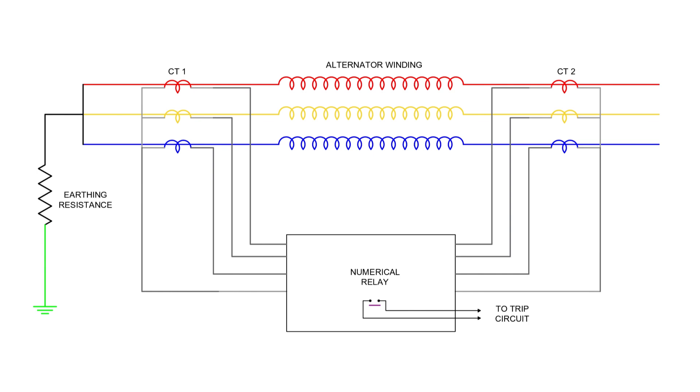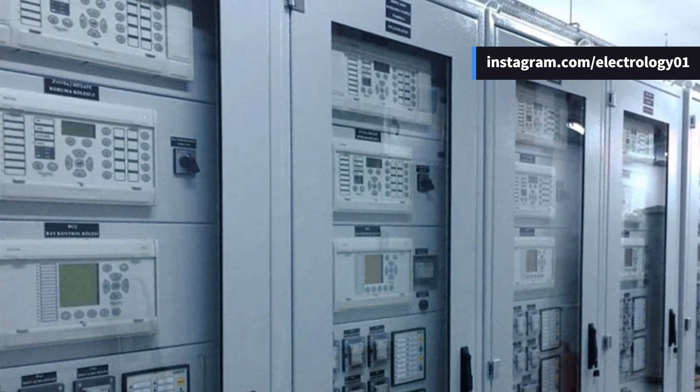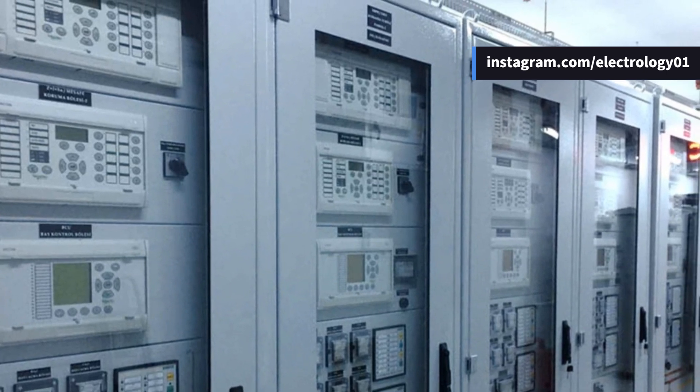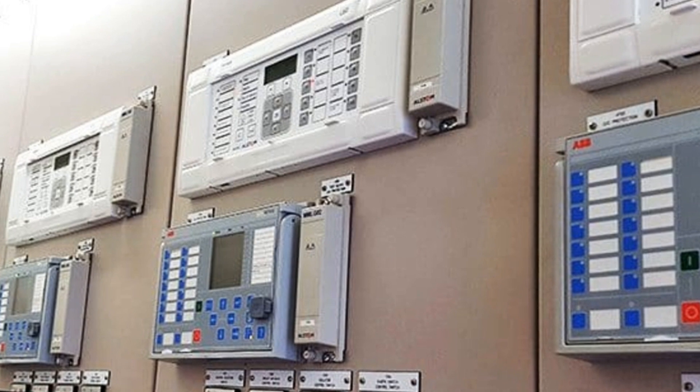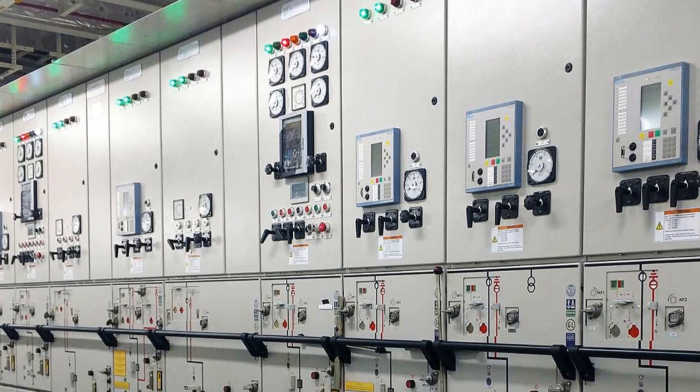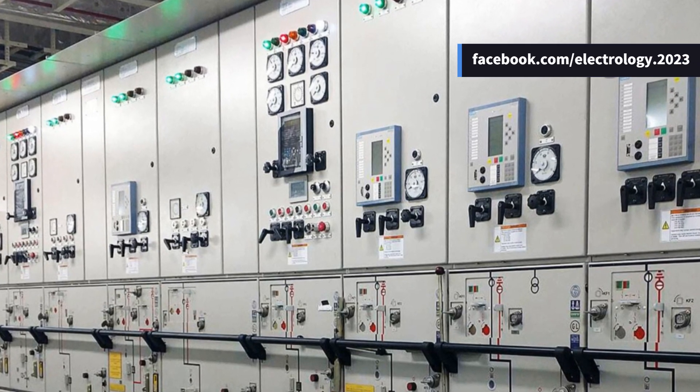If it detects a difference, meaning a differential current above the relay's set threshold, it instantly sends a trip signal to isolate the alternator by opening the circuit breaker. Numerical relays offer improved accuracy, faster operation, self-diagnostics, and communication capabilities compared to older electromagnetic relays, making them the preferred choice in most high-voltage installations today.